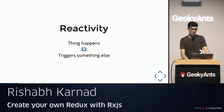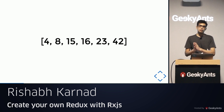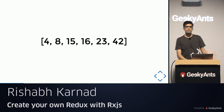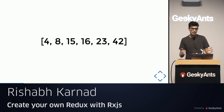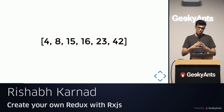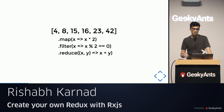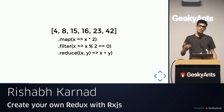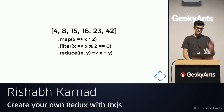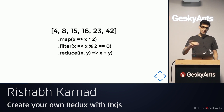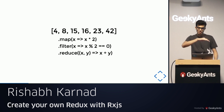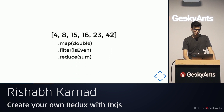Before going into how we can implement reactive programming, let's touch on something familiar: arrays — or lists in some languages. They are a collection of data you can operate on using operators like map, filter, and reduce. This allows you to deal with collections declaratively, writing what you want from the data by applying operations successively.